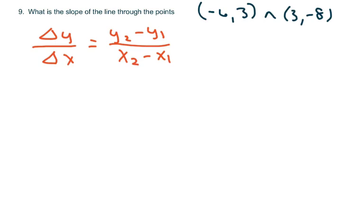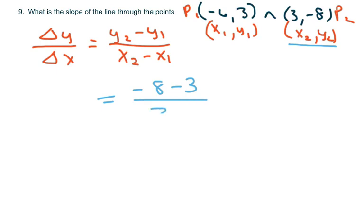And you can do each way. I'll call this point 1. So this is x sub 1, y sub 1. This is point 2. So I'll call this x sub 2, y sub 2. And just plug it in. It doesn't matter which point you call first. So it's negative 8 minus 3 over 3 minus negative 6. So that's negative 11 and this changes to a positive over 9. So that's your slope.